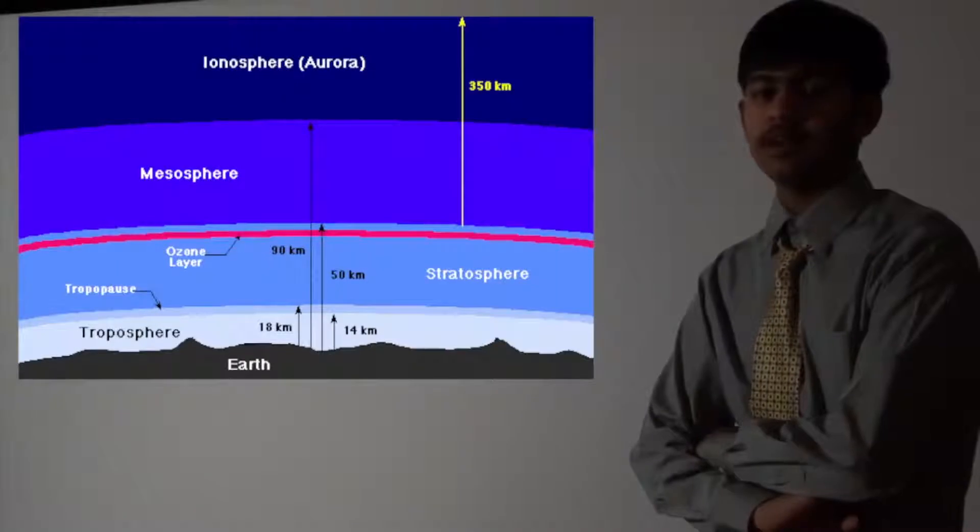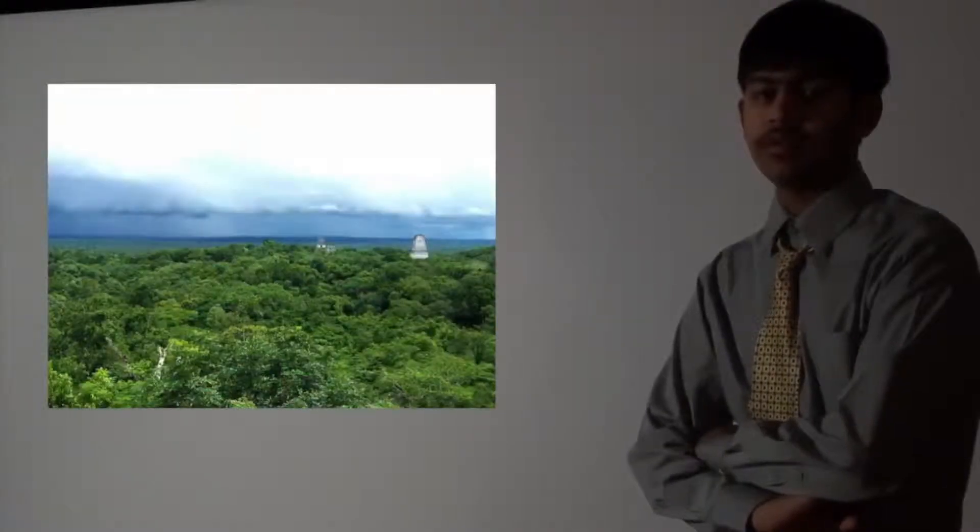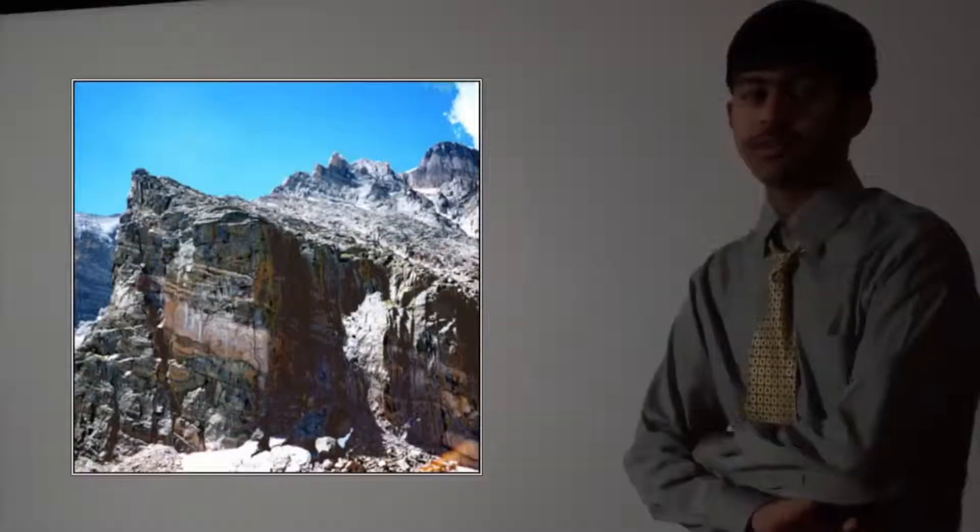There are four major systems of the Earth, and they are known as the atmosphere, hydrosphere, biosphere, and the geosphere.